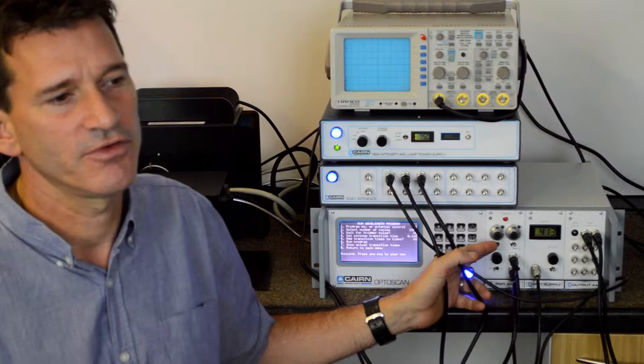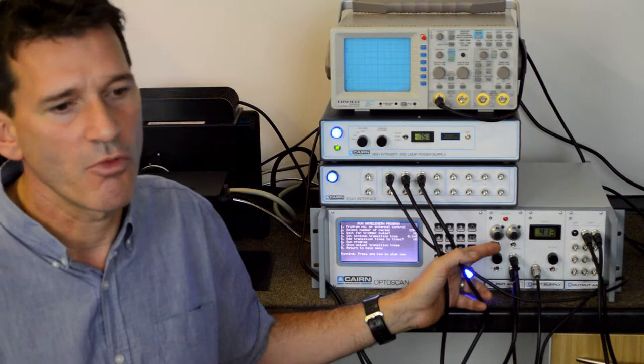So what I want to do is run the photomultiplier power supply in the region of 600 to 800 volts because this is the area where the photomultiplier will be linear.